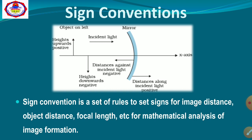The first arrow indicates height upwards is positive — it represents the object placed on the left-hand side of the mirror pointing upwards, so its height is taken as positive. The second is the incident ray; the ray from the object travels towards the mirror. The third arrow represents distance against incident light — after reflecting from the mirror, light moves back towards the object side, so that distance is taken as negative, while distances along the incident light are positive. The fourth arrow represents heights downwards, which are taken as negative.